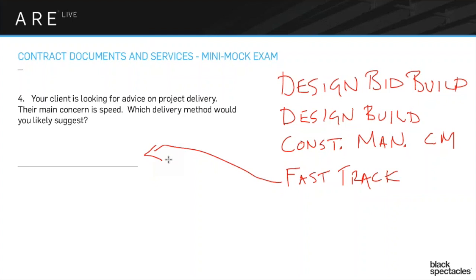That said, the extra expense may still be less than the total cost savings. On a very expensive site — like in the middle of Manhattan — it may make sense to spend $500,000 extra doing it fast track in order to get the building up and running faster, because you might save more than that $500,000 in loan costs. So among design-bid-build, design-build, and construction manager, fast track is clearly the answer when speed is the priority. It's not particularly common in practice, but it shows up on the exam because it's such a specific concept and an easy one to ask questions about.